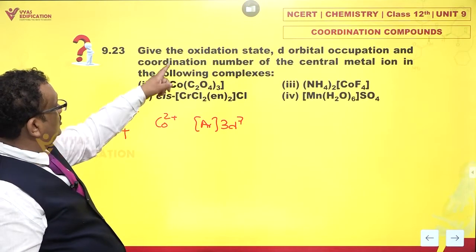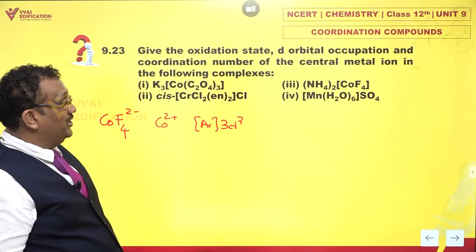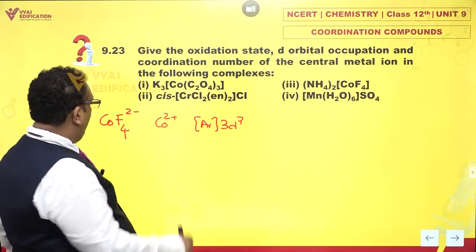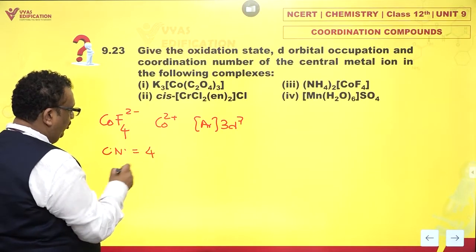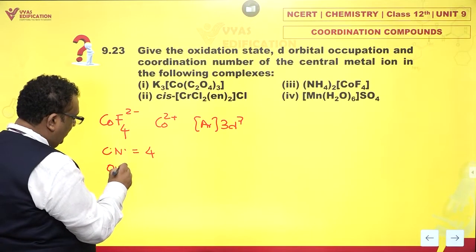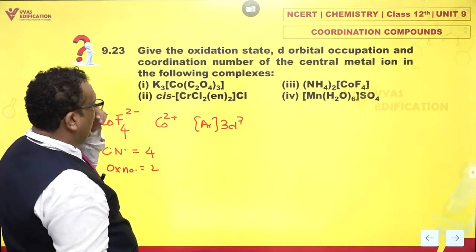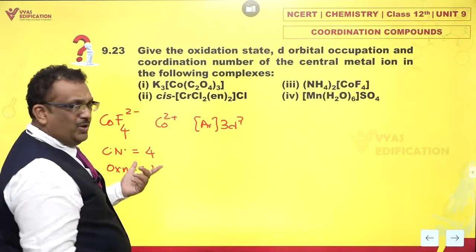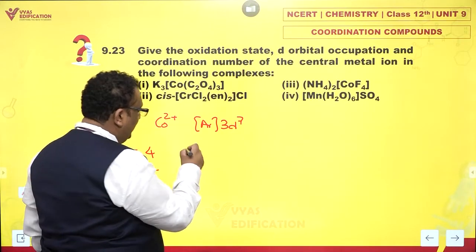So, oxidation state is +2. We have answered d-orbital occupation and coordination number. Now, coordination number of central metal ion is 4. Oxidation number is 2, of course. And d-orbital occupation, I think that's pretty simple. Why? Because fluoride ions are weak field ligands. No pairing is involved.